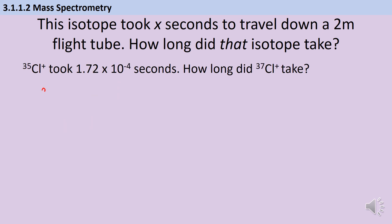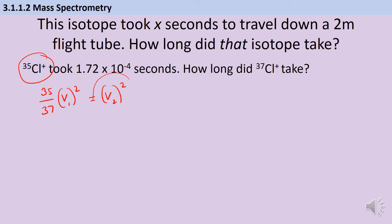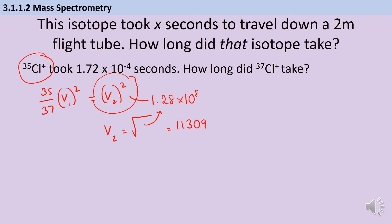For question three, we end up with an expression of (35/37) × velocity of chlorine-35 ion squared = velocity of chlorine-37 ion squared. We get a value for v₁² of 1.28 × 10⁸, and the square root gives us 11,309 metres per second. Therefore that gives us a time of 1.77 × 10⁻⁴ seconds.